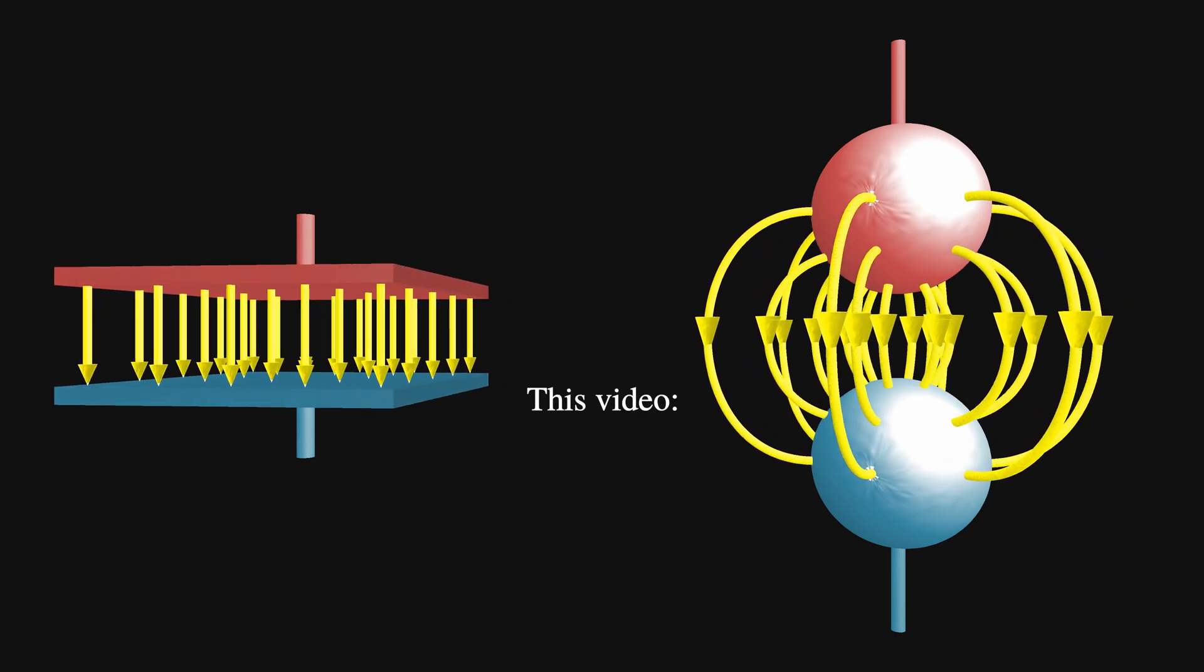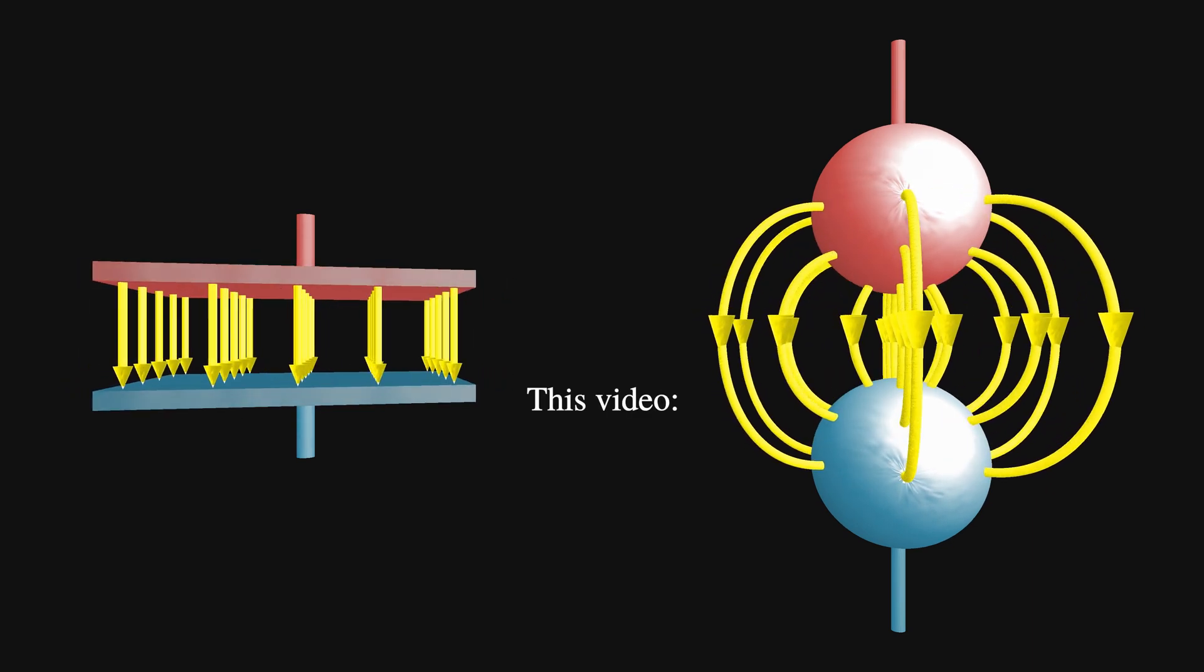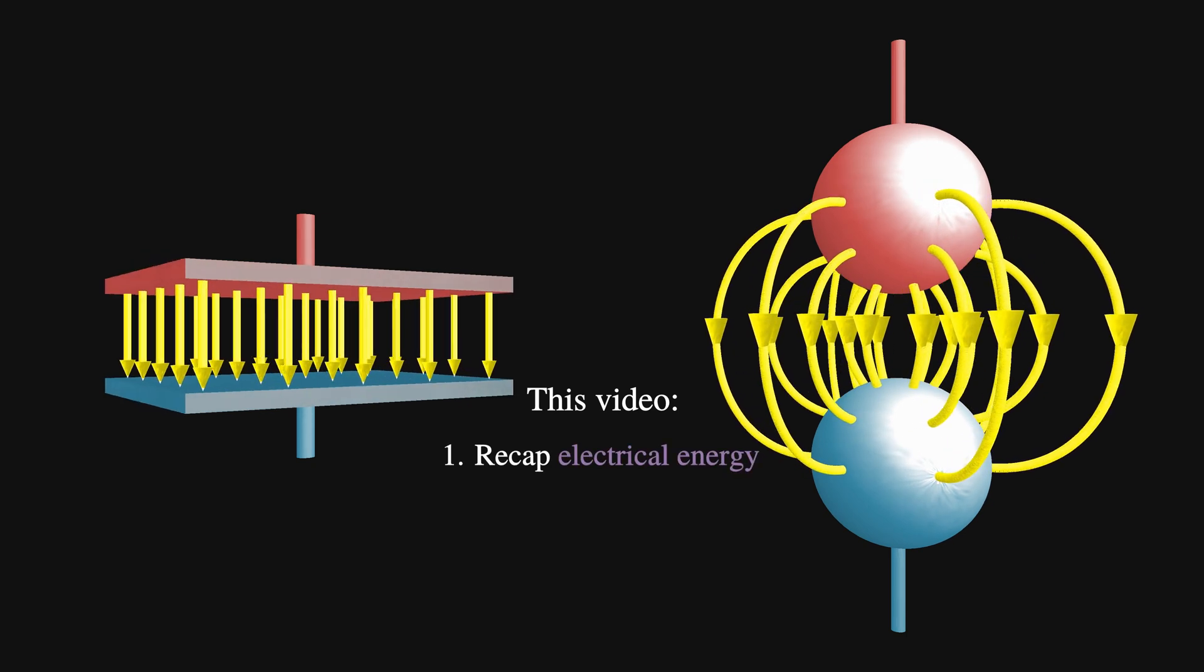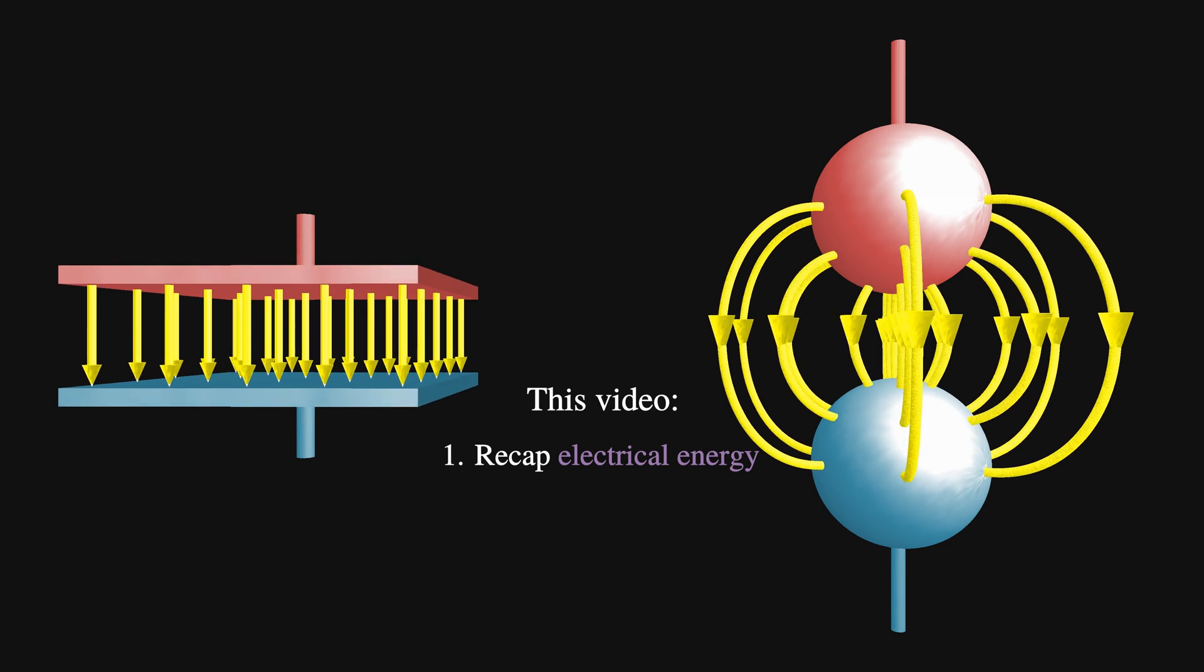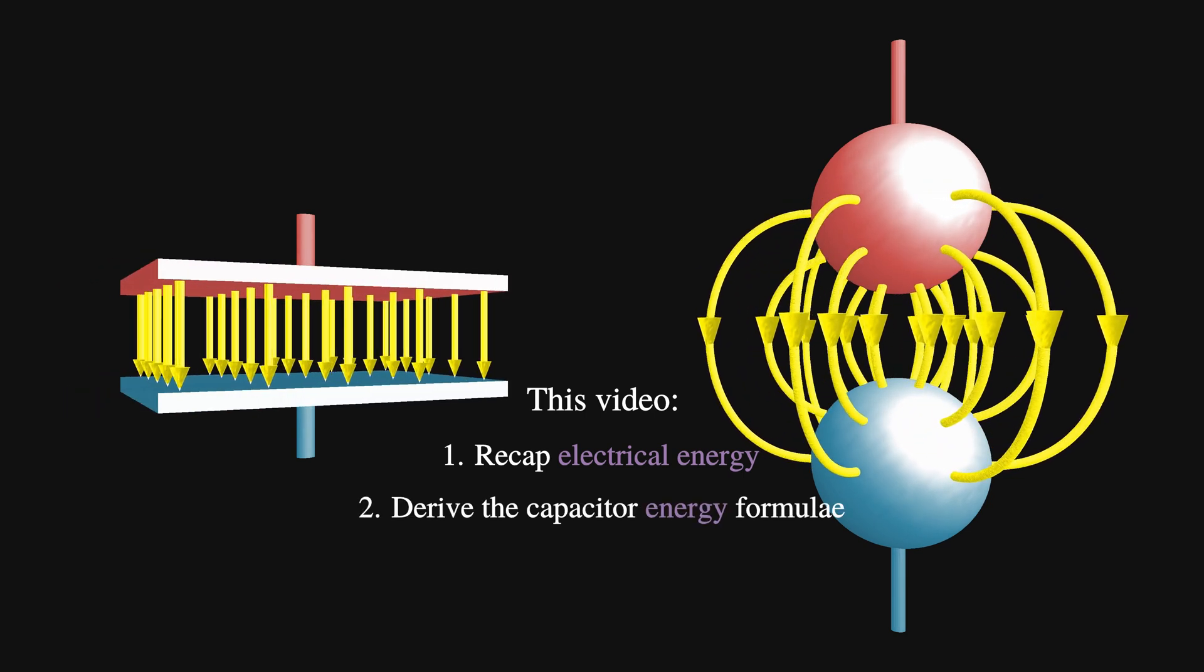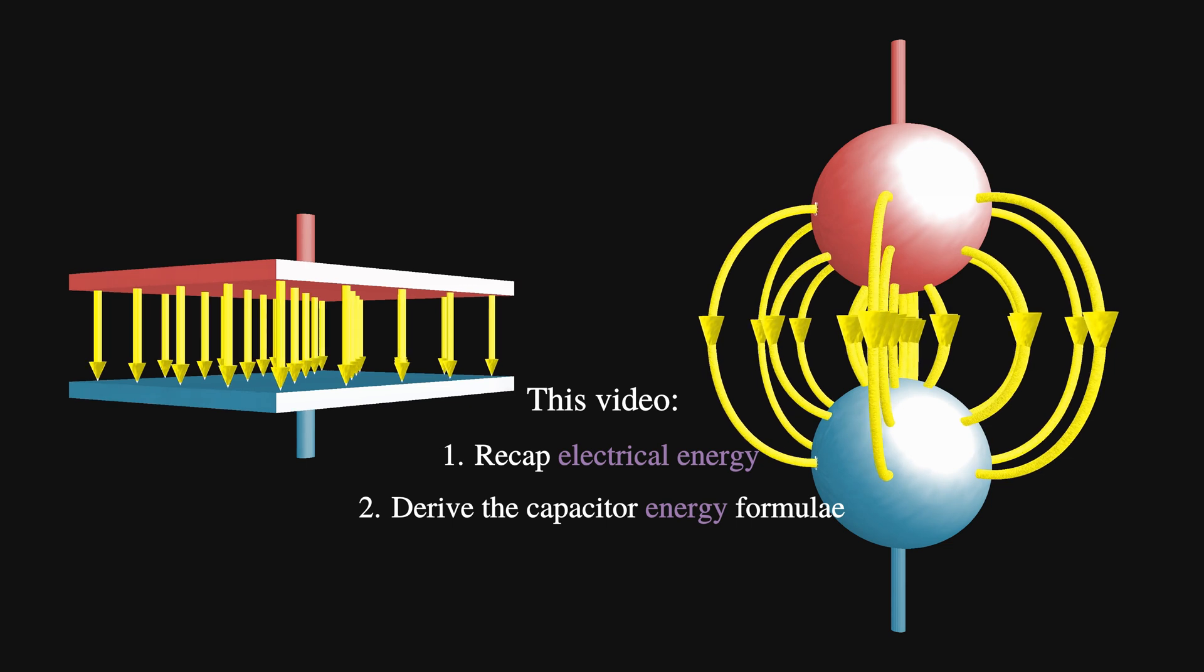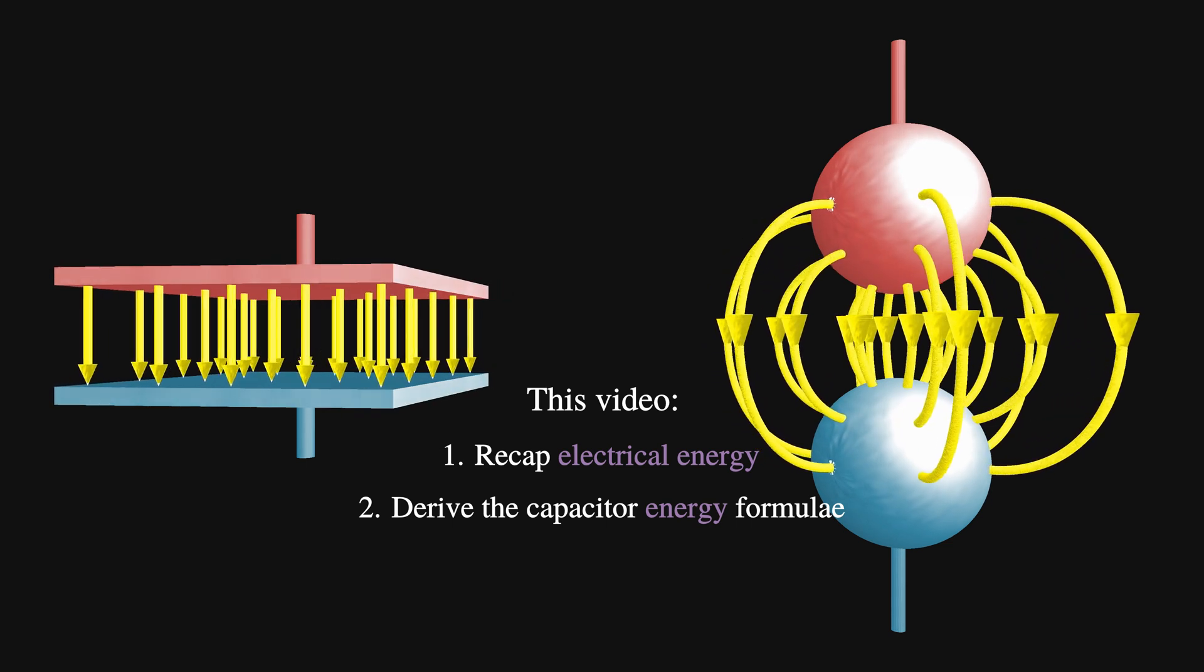In this video, we're going to unpack all of this. First of all, we're going to go through the most basic principle of electrical energy, which is that it's just charges moving through voltages. From this, we'll then rebuild our capacitor energy equations and create some visuals to understand why they are what they are.